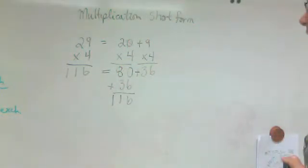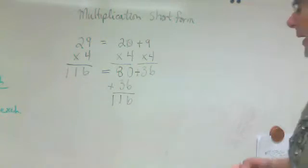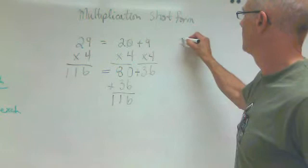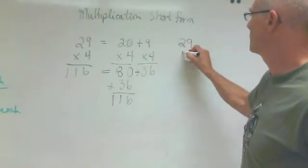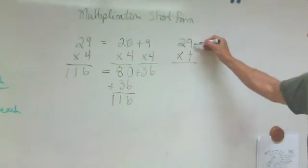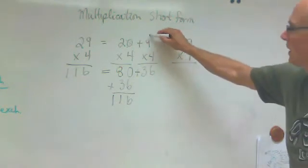So we're going to look next door now and do it the short way. 29 times 4. The first thing we're going to do is we're going to multiply the ones by each other, which is the same as this.